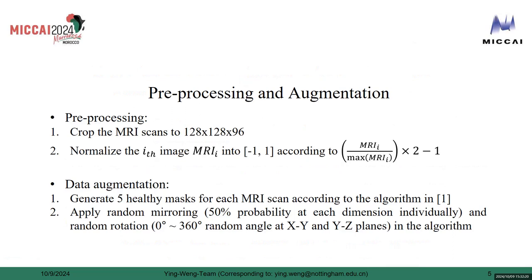There are two steps in our pre-processing. We firstly crop the MRI volumes to 128 by 128 by 96. We secondly normalize each MRI image into the range between minus 1 and 1 according to MRI divided by max value,